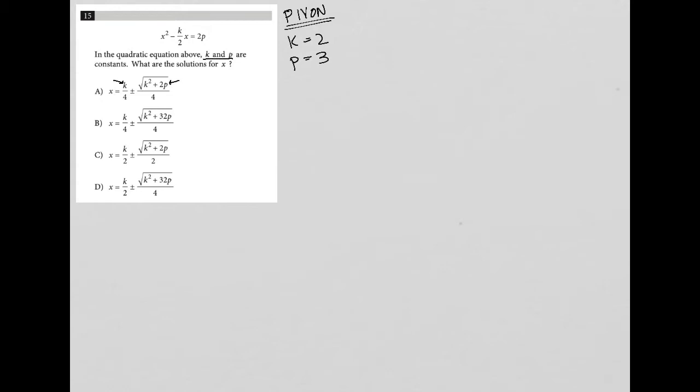So with those two numbers that I'm plugging in, that means that my quadratic equation would turn into x squared minus, instead of k divided by 2, it'd be 2 divided by 2, x. And instead of equals 2p, it's going to be 2 times 3, because I replaced p with 3. To simplify this, I get x squared minus x equals 6.